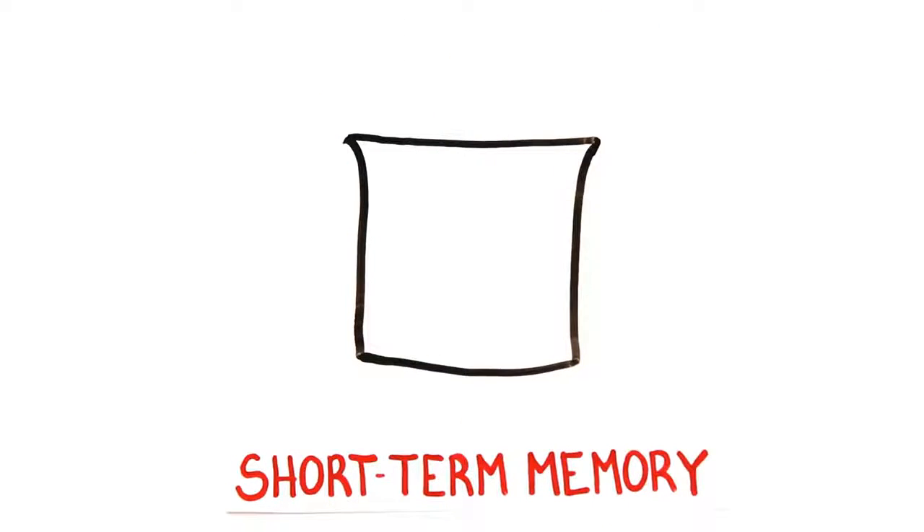Our brains have both short-term and long-term memory. But the short-term memory, or sometimes called working memory, can only hold so much information. And if you don't focus on it, it fades away quickly.